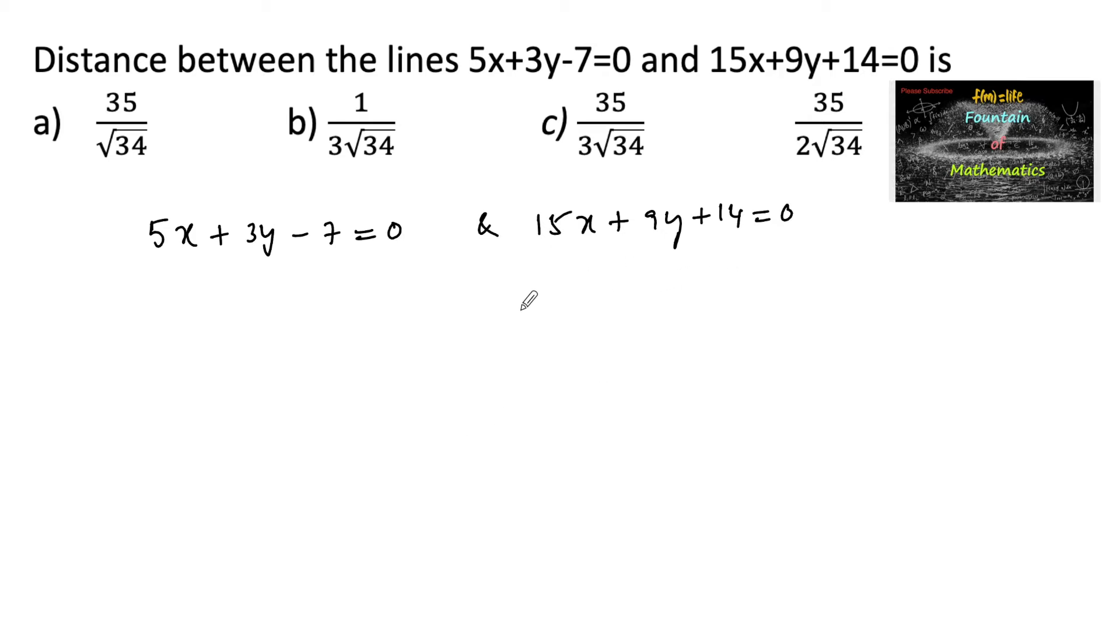The second line we can also write by taking 3 common: 3 times (5x plus 3y plus 14 upon 3) equals 0, or we can write 5x plus 3y plus 14 upon 3 equals 0.